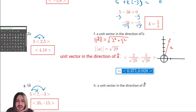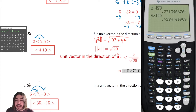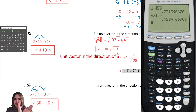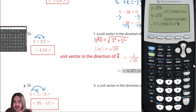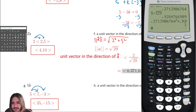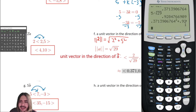You can verify your answer by using the Pythagorean theorem again — since we're trying to find a vector of length one, the hypotenuse should be one. Squaring these two components and adding them: it might be off a tiny bit due to rounding, but we get exactly one. So we have a high degree of confidence we got it right.